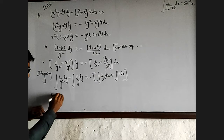This is the power rule: y to the power of negative 2, dy. Applying the direct formula gives y to the power of negative 2 plus 1.